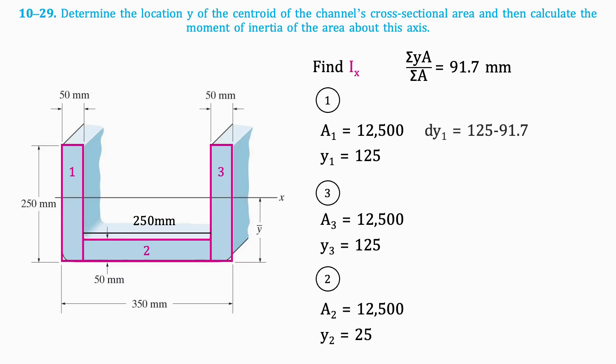For the first section, dy can be found by subtracting the centroid of the shape from the centroid of the section. The result is 33.3. The moment of inertia of the first section is calculated using the following formula.